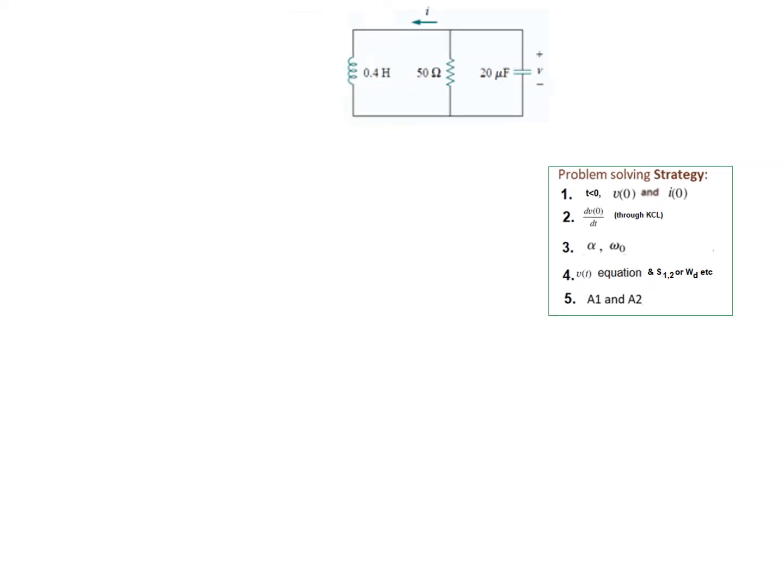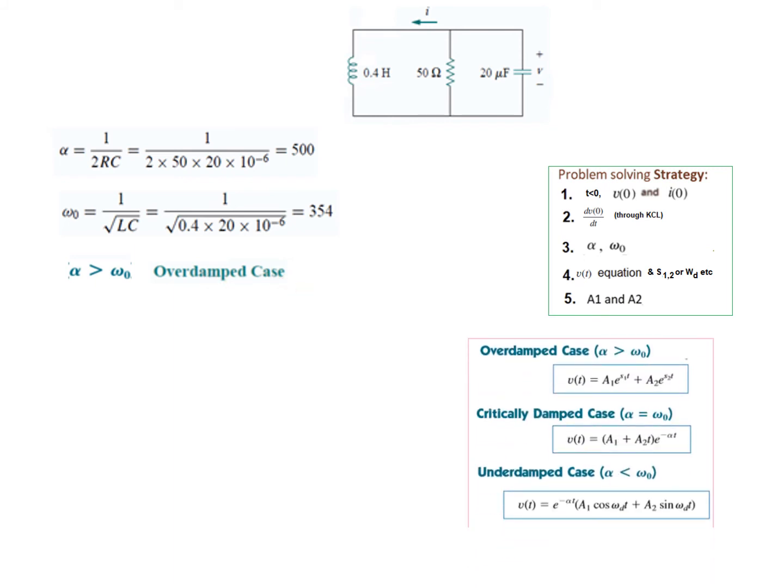So that is the second step. Now we'll go to the third step to find alpha and omega. We'll just plug in the values in the formulas for alpha. So alpha comes to be 500. And omega comes to be 354. From here we can just conclude that since alpha is greater than omega, therefore this is an overdamped case. For overdamped case we select this equation. So this is our voltage equation for overdamped case.